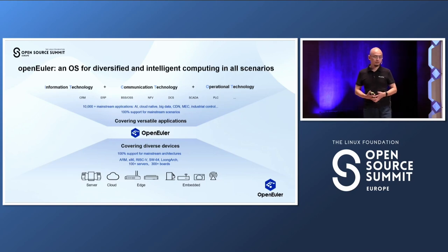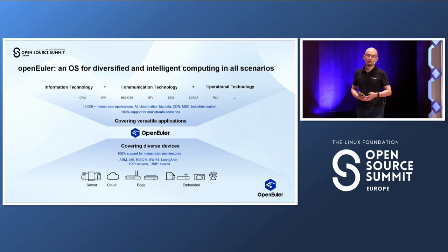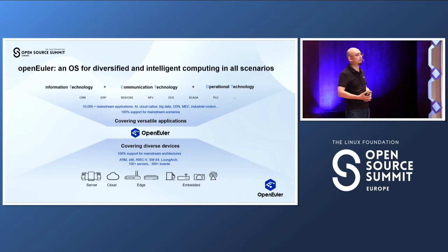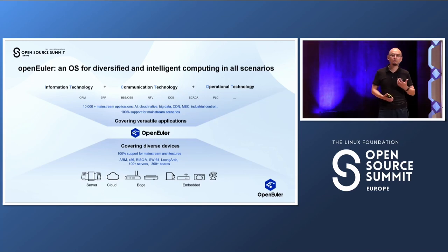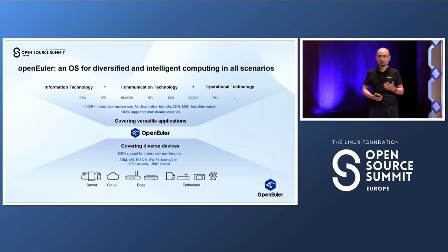openEuler is an open source operating system to support both versatile applications and diversified devices. From the application's point of view, we cover almost all mainstream scenarios. We support CRM and ERP applications from the information technology point of view. We support OSS and NFV from communication technology. We even support DCS, SCADA, and PLC from operational technology — that's mostly about industrial manufacturing. And we support all these mainstream applications from AI to cloud native to big data.